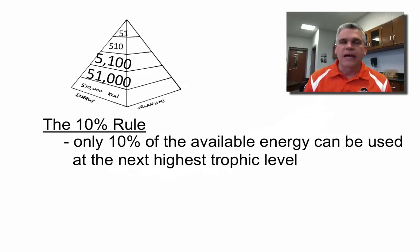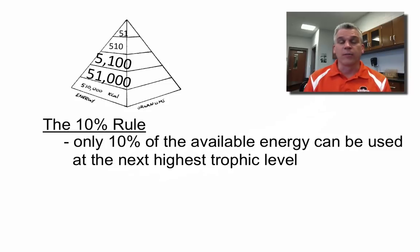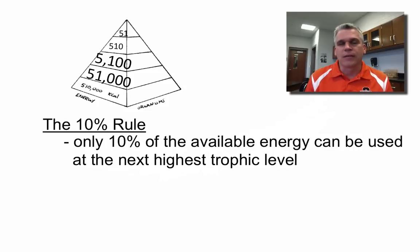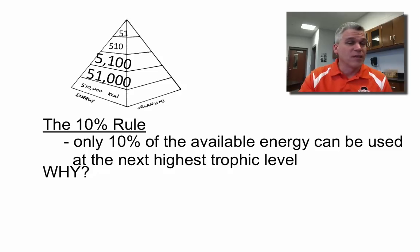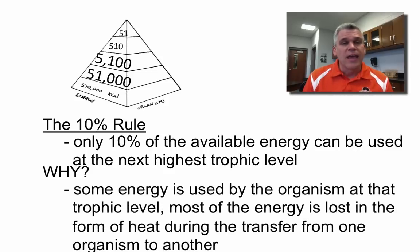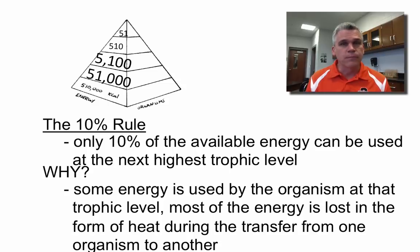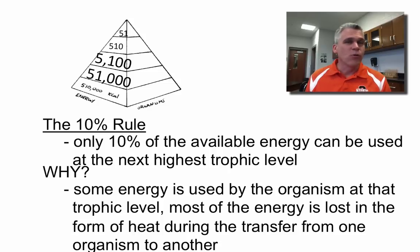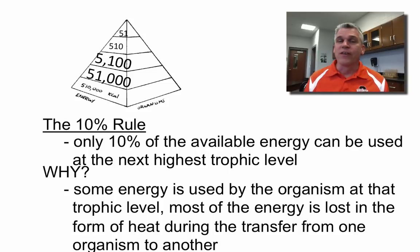This is what's known as the 10% rule, which says that only 10% of the available energy can be used at the next highest trophic level. So if there's 510,000 kilocalories of energy at the producer level, there's only going to be 51,000 — or 10% — available for the primary consumers. What's happening to that other 90%? The primary producers are using some of that energy themselves to maintain life. But besides that, any time you transform energy, much of it gets lost in the form of heat. When one organism eats another, they don't get all the energy — much of it changes into heat.